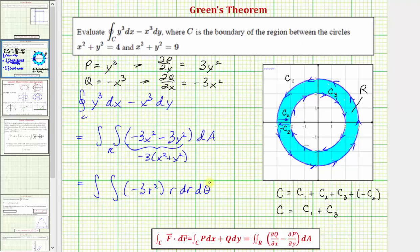Now we need the limits of integration for r and θ. Because region R is bounded between two circles where the inner circle has a radius of two and the outer circle has a radius of three, the limits for r are from two to three. To trace out the full region between the circles, the limits for θ are from zero to two pi.